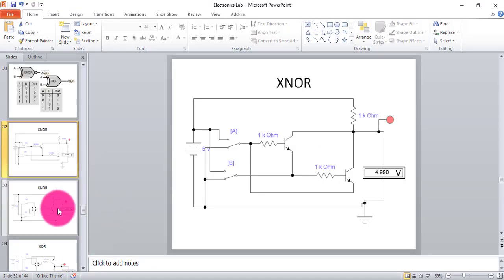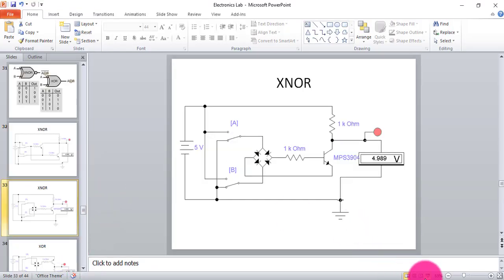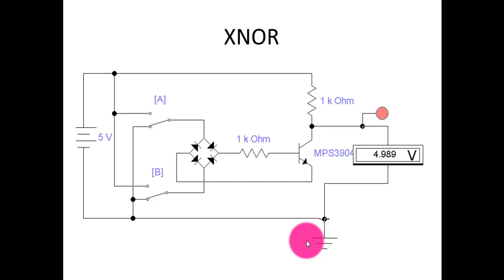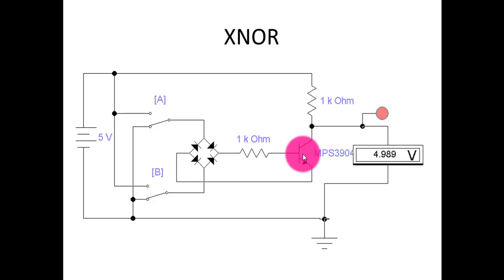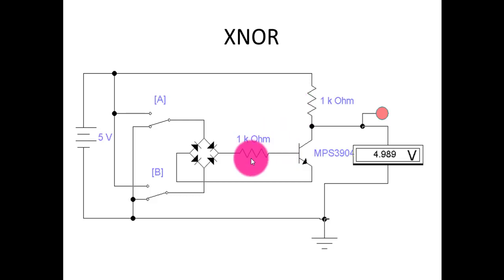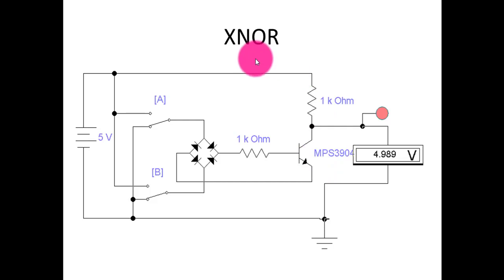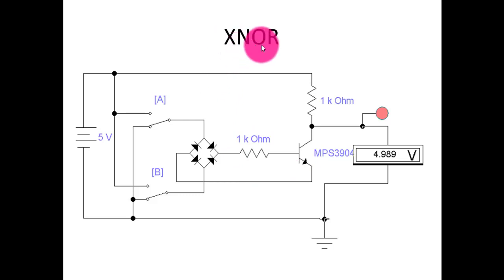There is another circuit with which we can design the exclusive NOR gate. In this circuit, we shall use four diodes along with a transistor. With four diodes, one transistor, and two resistances — one on the collector and one on the base terminal of the transistor — we can design the exclusive NOR gate. Let's go to the electronic workbench to design this circuit.